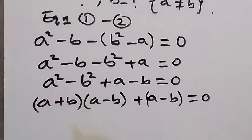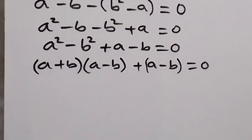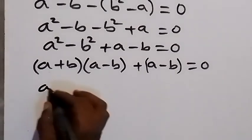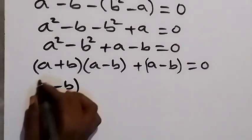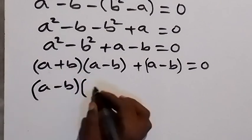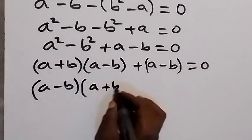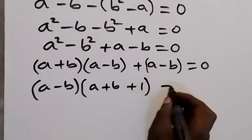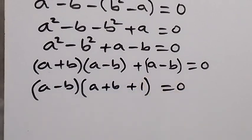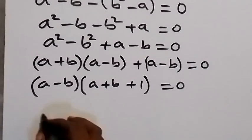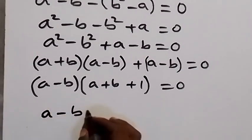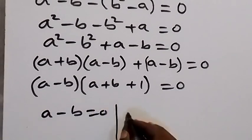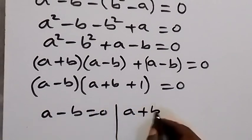The a² minus b² is a difference of two squares, which factors as (a+b)(a-b). So we have (a+b)(a-b) plus (a minus b) equals zero. We take (a minus b) as the common factor and factor it out, giving us (a minus b) multiplied by (a plus b plus 1) equals zero.